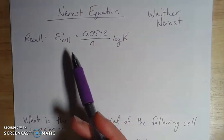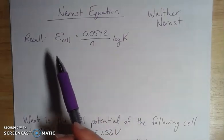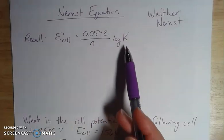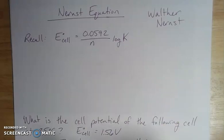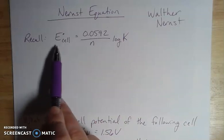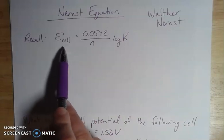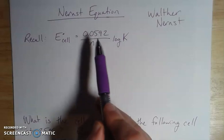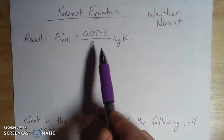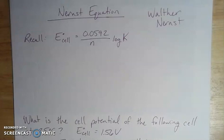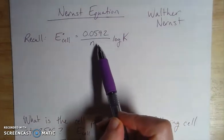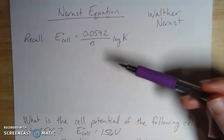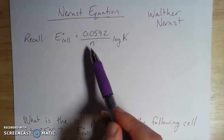The Nernst equation is really useful and important because it builds on the relationship between the cell potential and the equilibrium constant. We're thinking about thermodynamics, equilibrium, and cell potentials. The standard cell potential for a voltaic cell is equal to this quantity which combines together a number of different constants.